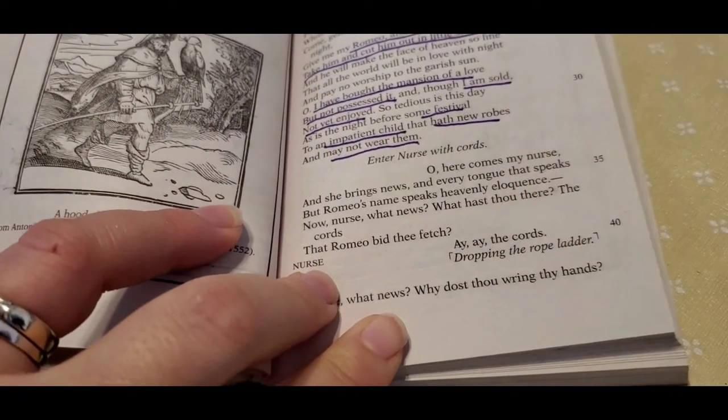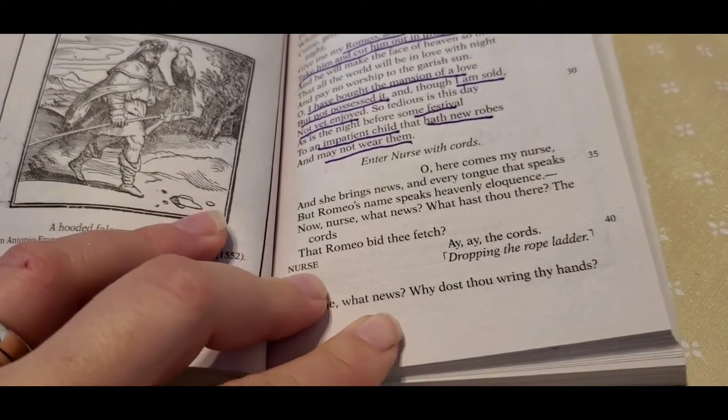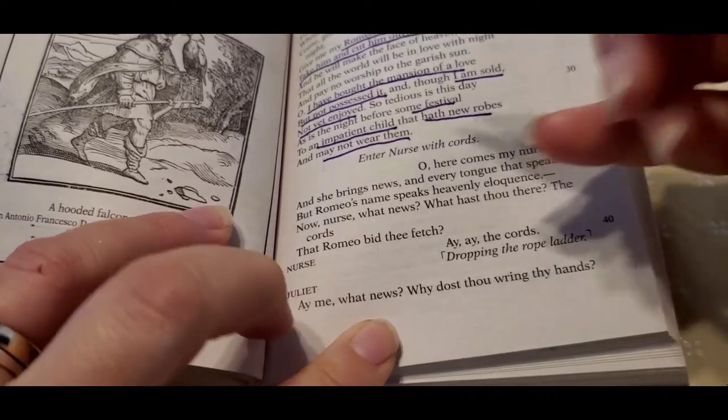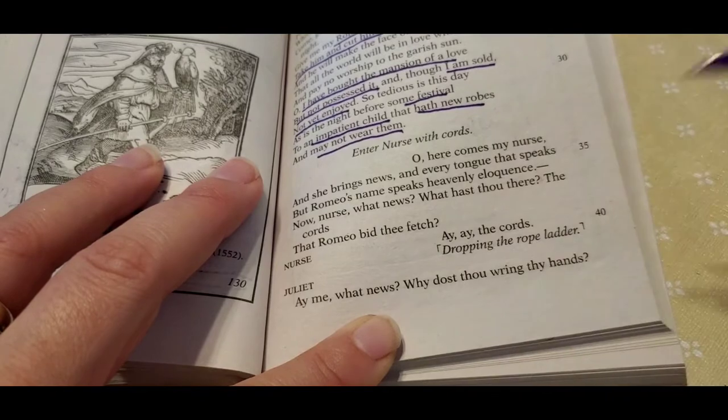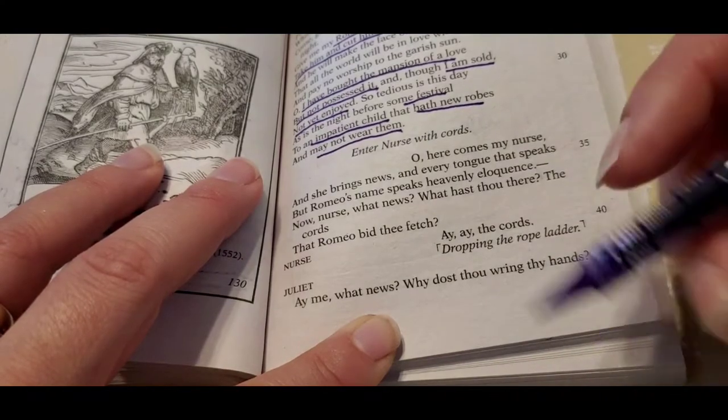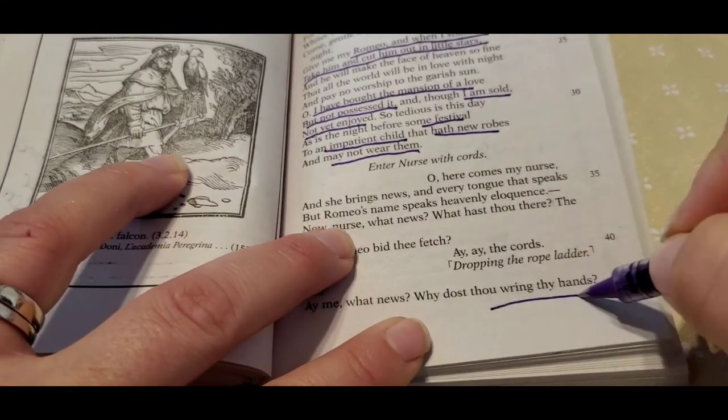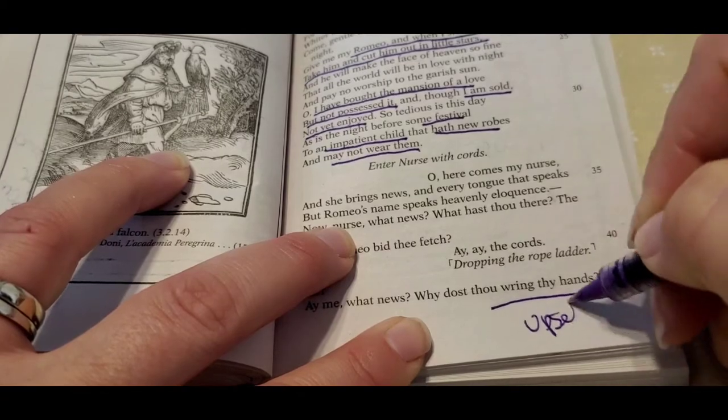She says, here comes my nurse. Now remember, Juliet has no idea that Romeo just killed Tybalt. No idea, right? And so the nurse comes in, and she says, are those the cords? And so she throws them down the rope ladder. And she's wringing her hands. The nurse is upset.